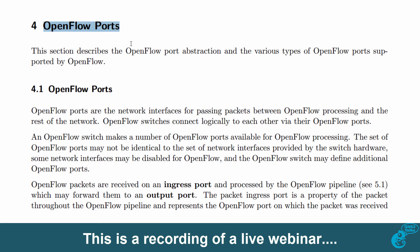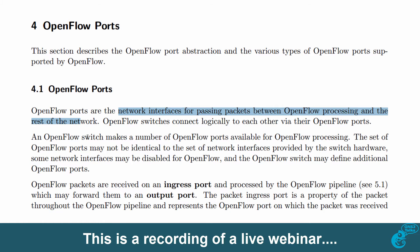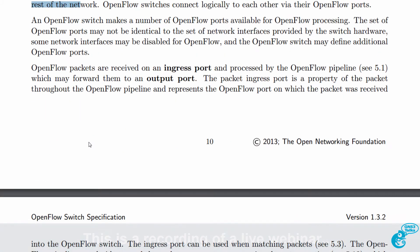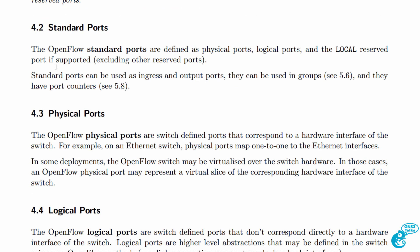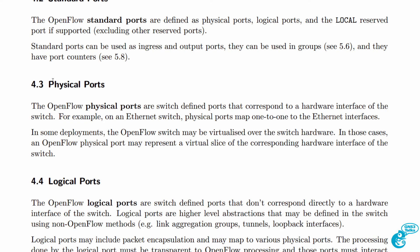What are OpenFlow ports? An OpenFlow port is a network interface for passing packets between OpenFlow processing and the rest of the network. It gets a bit confusing because there are different types of ports: standard ports, physical ports, and logical ports. A physical port is what you would expect — it's a hardware interface of a switch, like Ethernet 1 or Ethernet 2.